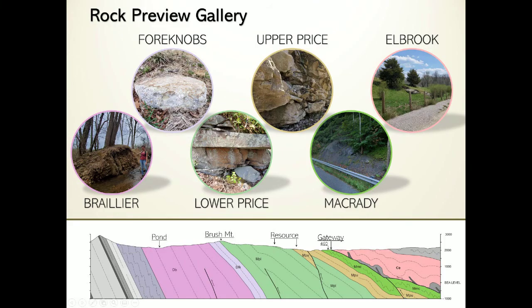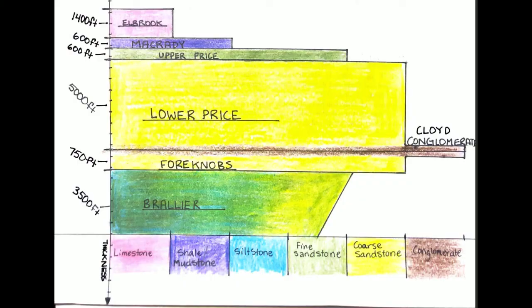Let's start by looking at the mountain stratigraphy. Here we have a stratigraphic column of the six formations showing a regressing and transgressing sea level beginning at the Brailler Formation. As sea level regresses, energy increases, and deposited grain sizes grow as we approach the Lower Price. The energy is at the highest at the cloy conglomerate and decreases through the units to the Elbrook, where energy is at the lowest and sea level is at the highest.